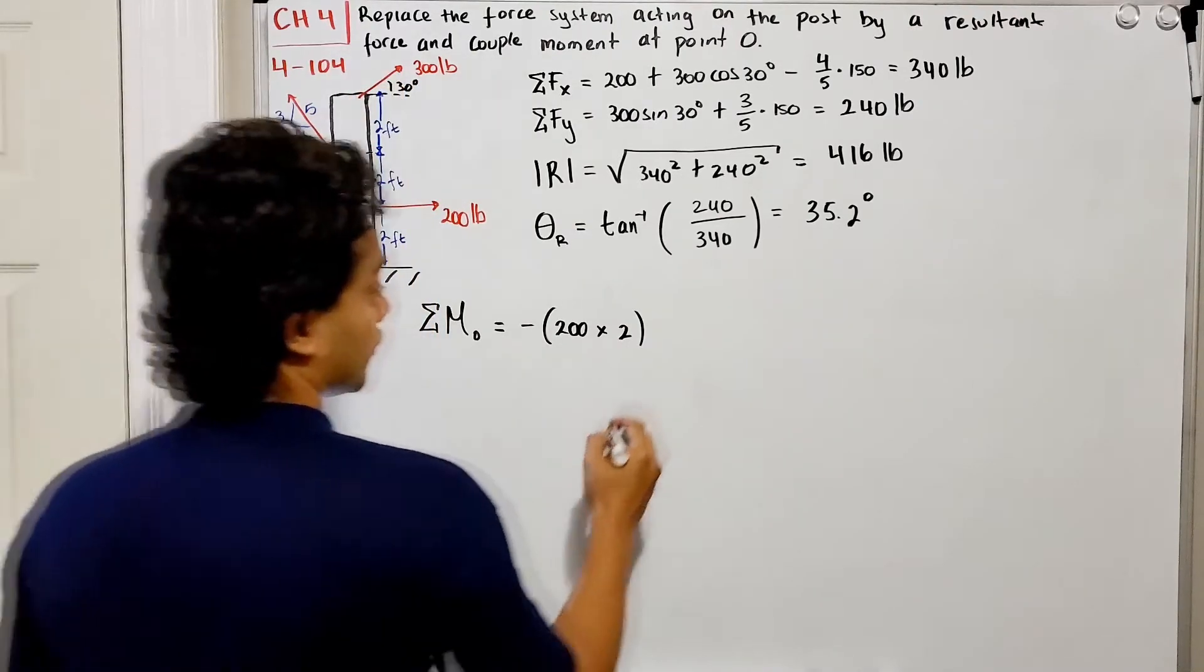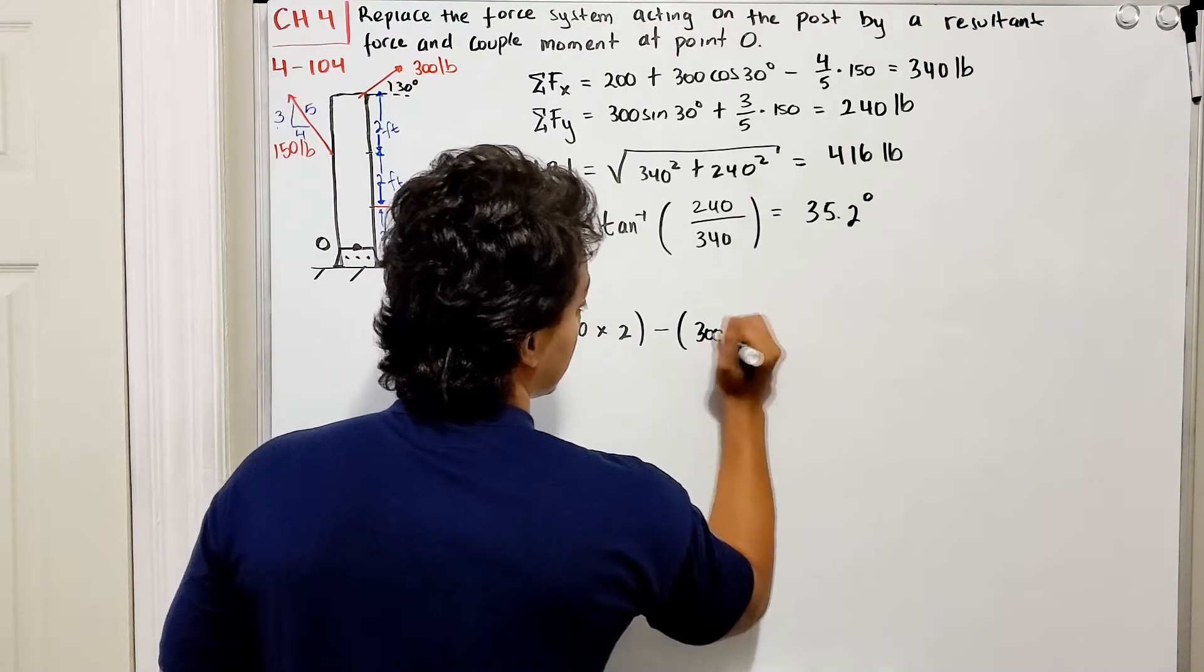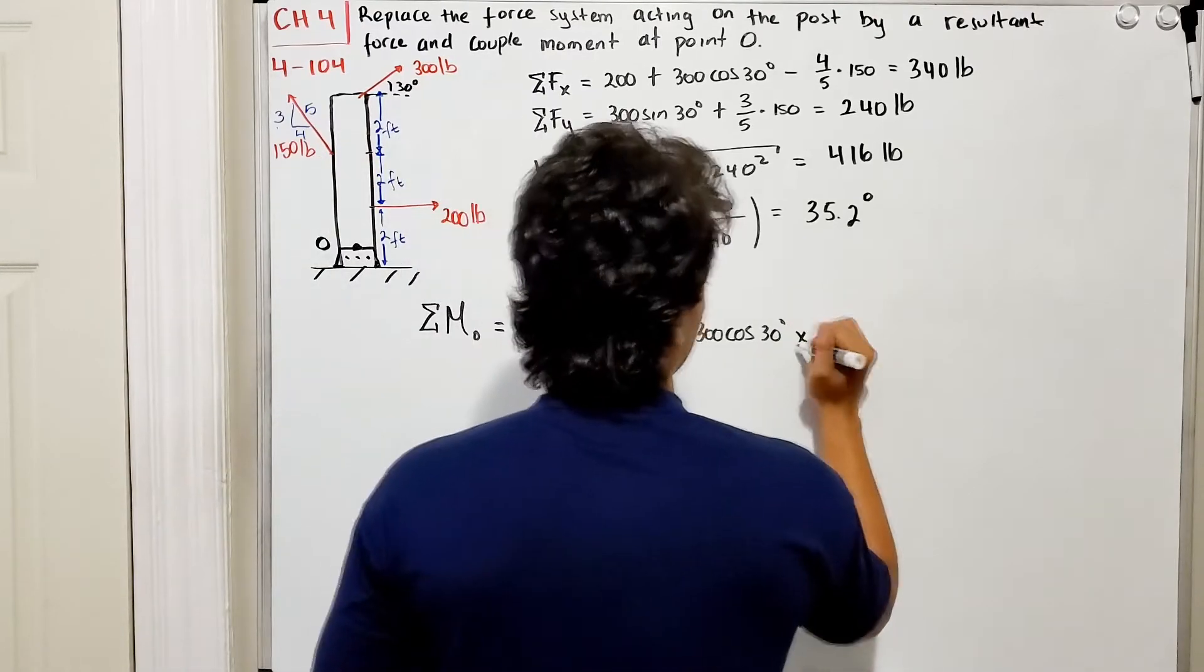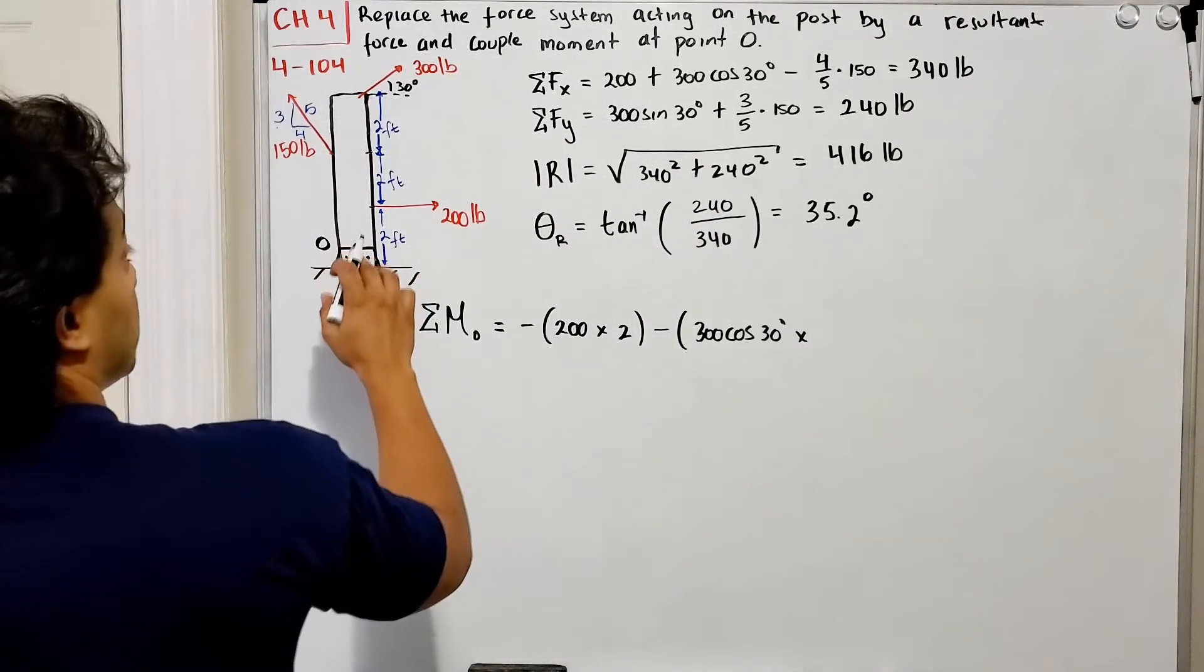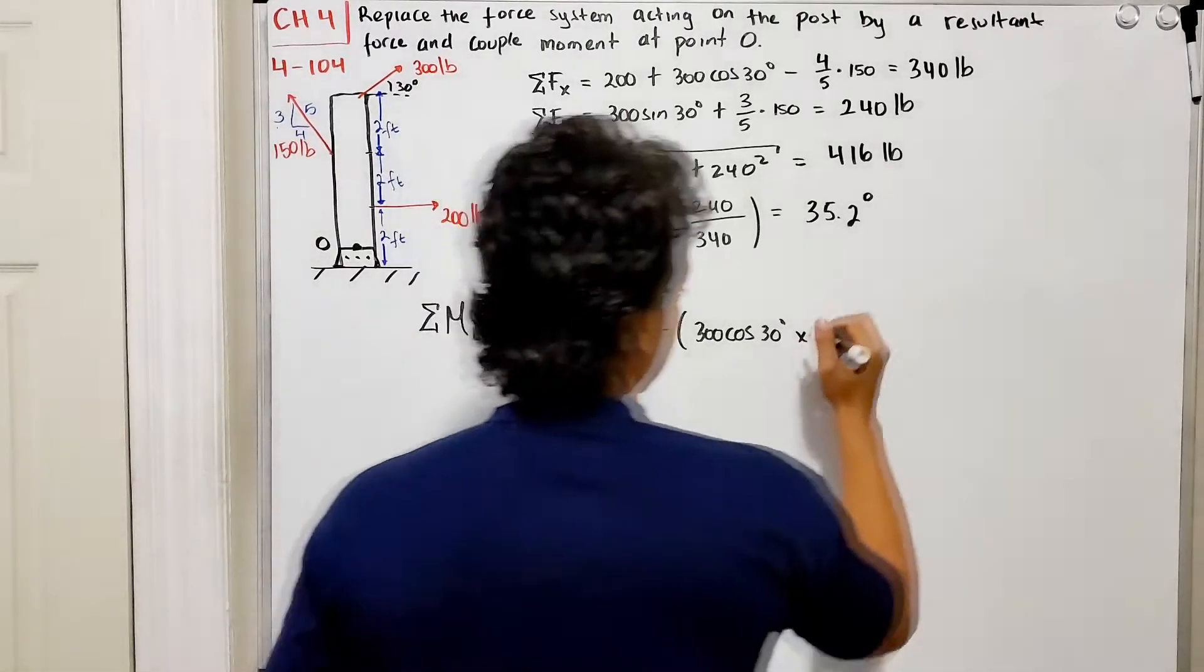The x component of this 300 is going to be negative. I got 300 multiplied by cosine of 30 degrees multiplied by the distance, which is going to be 2, 4, and 6 feet, so multiply by 6.